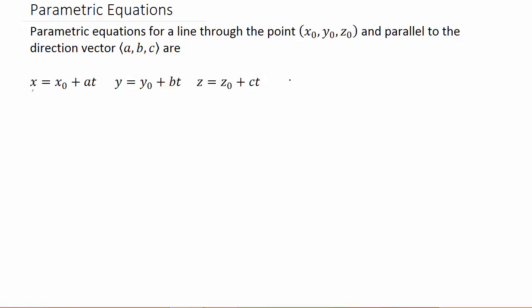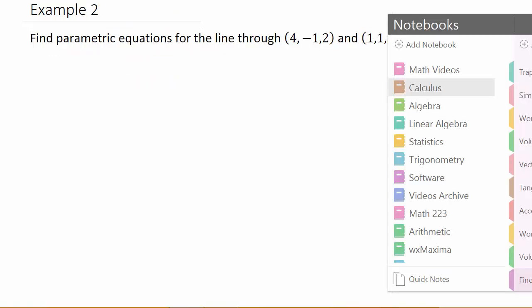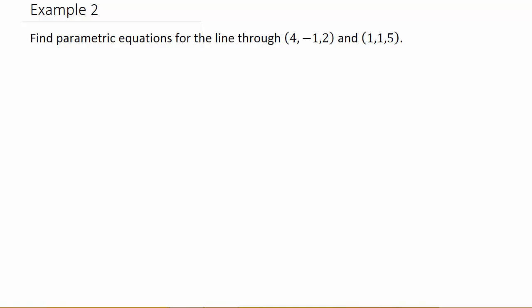Let's look at our second example. It says find parametric equations for the line through (4, -1, 2) and (1, 1, 5). So it's given us two points that it's passing through.